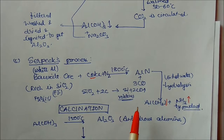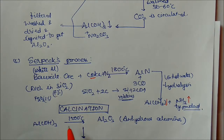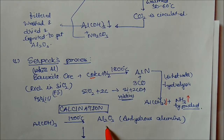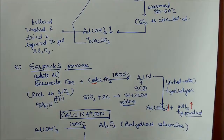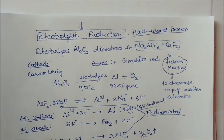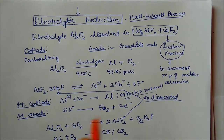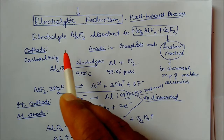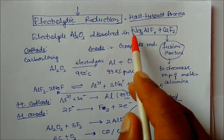After obtaining alumina, the next step is calcination: aluminium hydroxide is heated at 1500 degrees centigrade to get anhydrous alumina. Then the next process is electrolytic reduction, called the Hall-Héroult process.